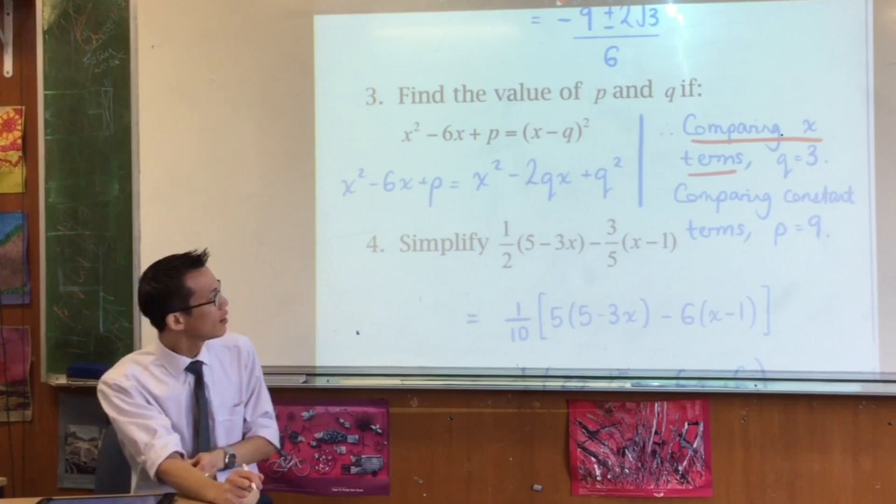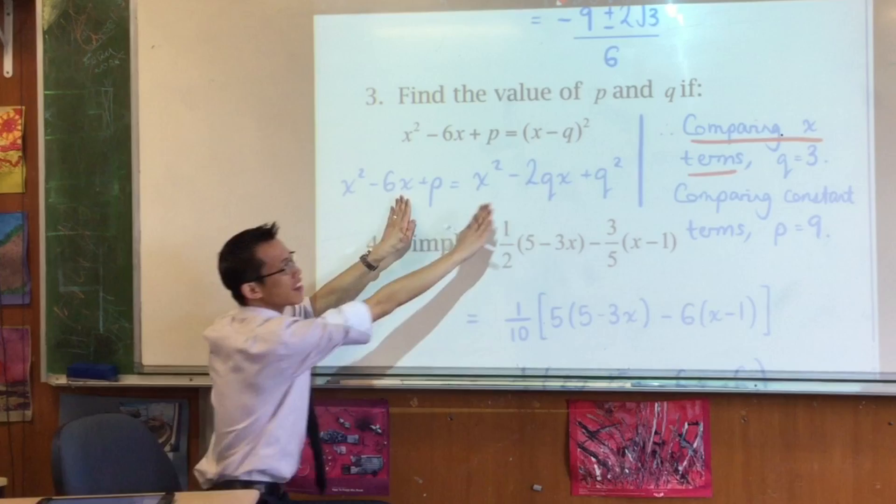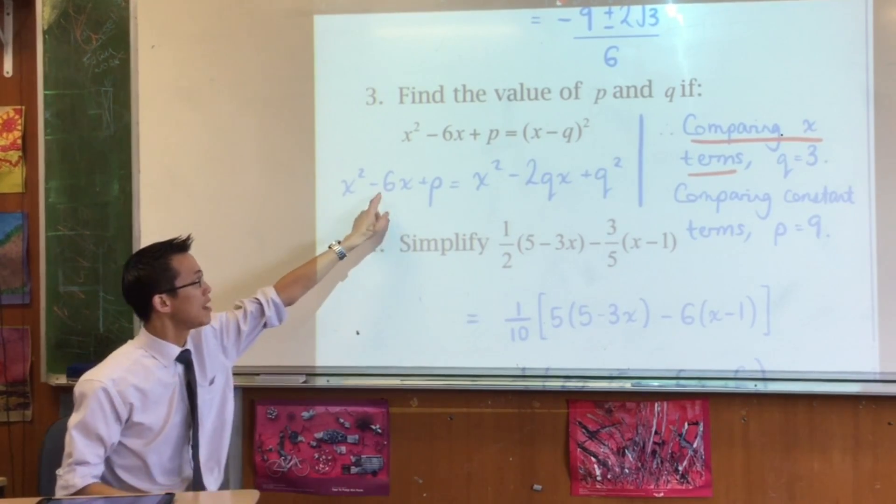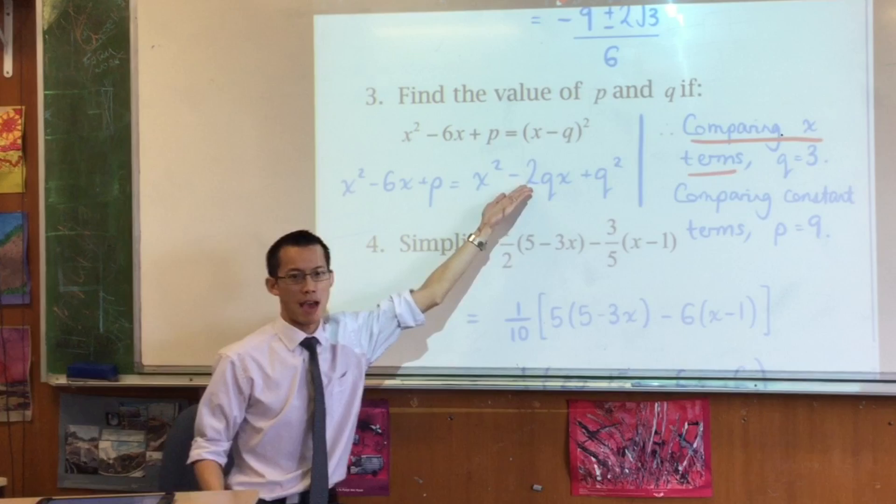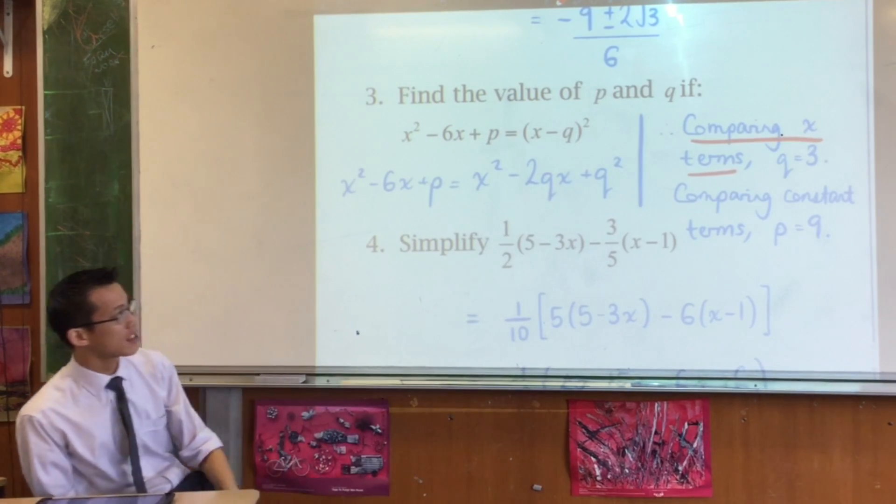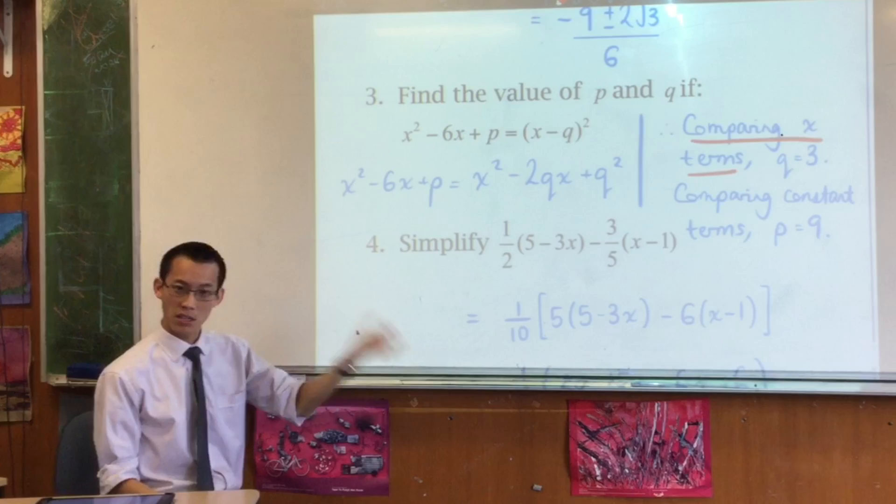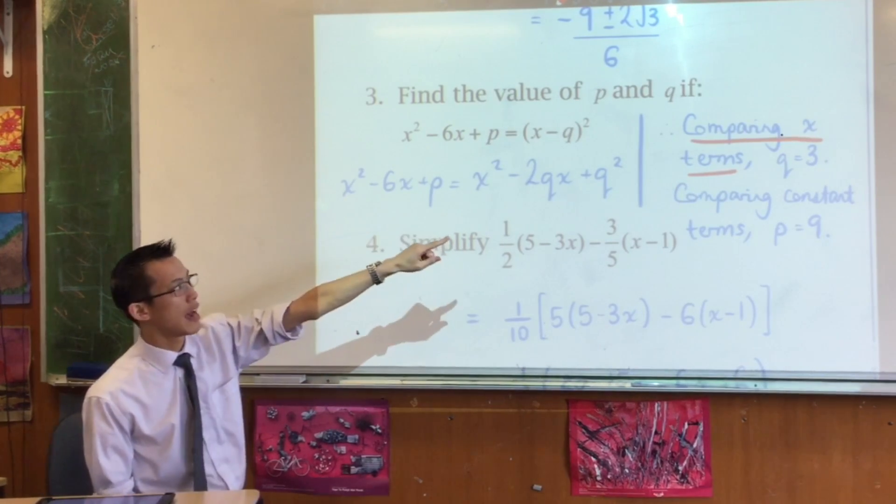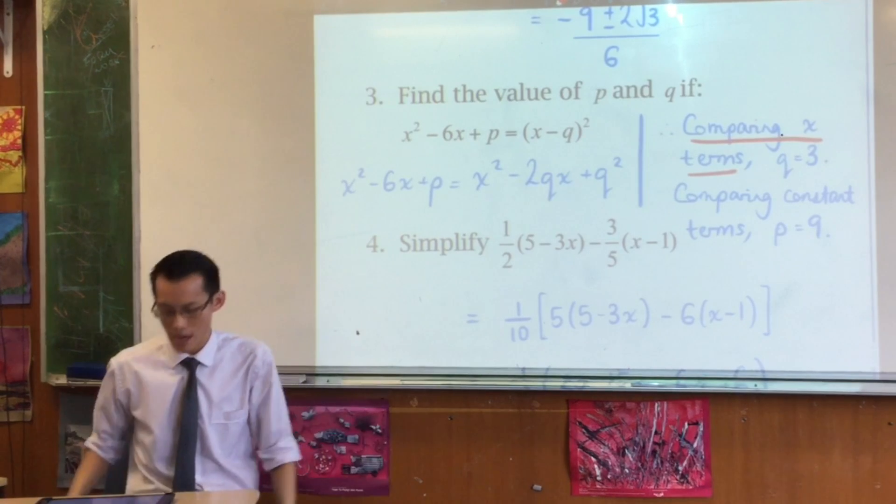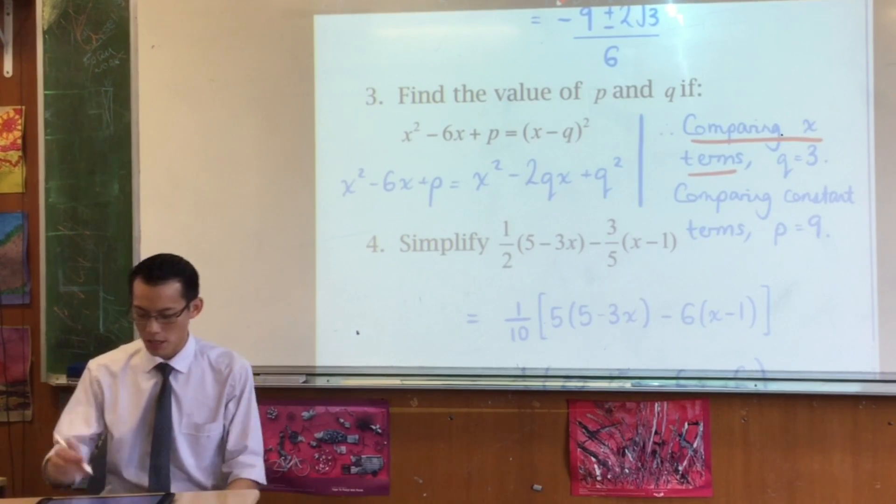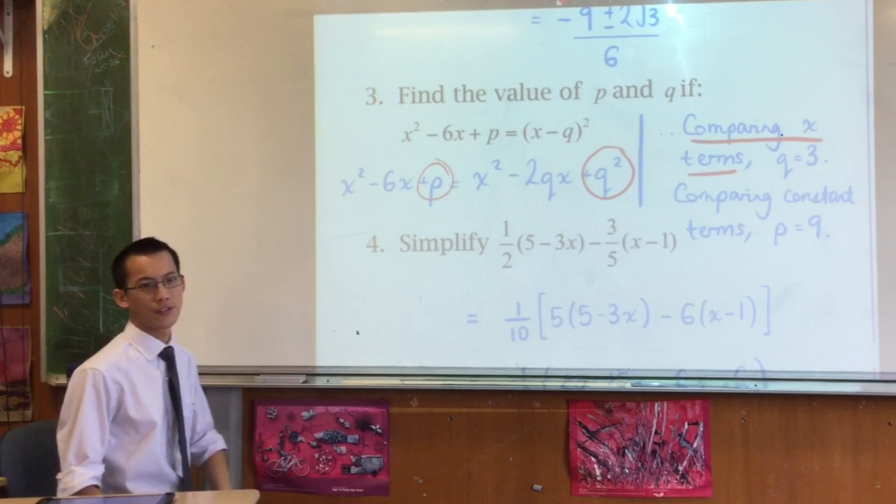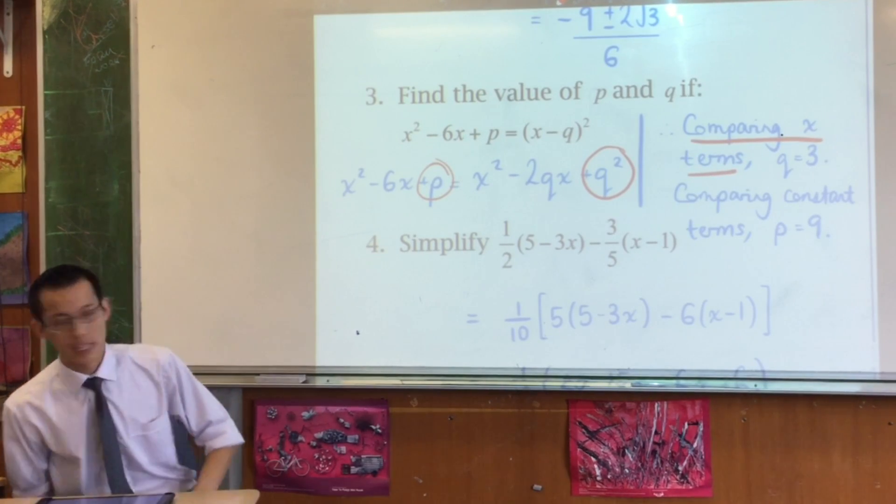Why is q equal to 3? Well, because if you have a look at the x terms, q has to be 3. What else could it be in order to have minus 6x over here and minus 6x over there? They better be, right? They're equal. So I compare the x terms. Once you know what q is, then on the right-hand side, you've got a q squared. That's the constant term, because there's no p's or q's or x's or whatever. So, q squared must be 9, and that corresponds to p on the left-hand side.